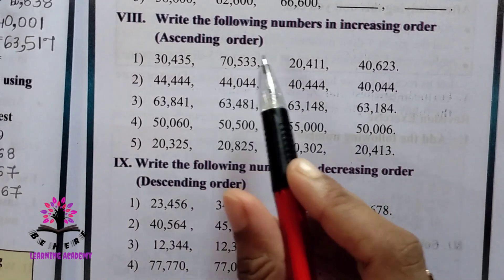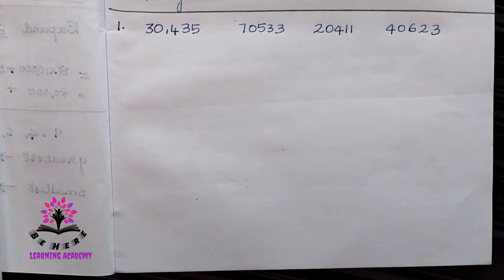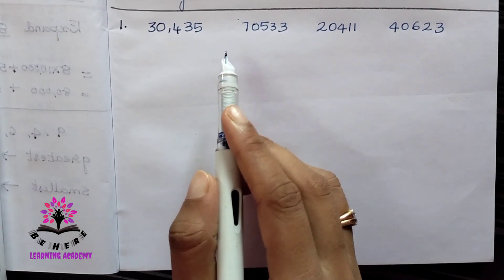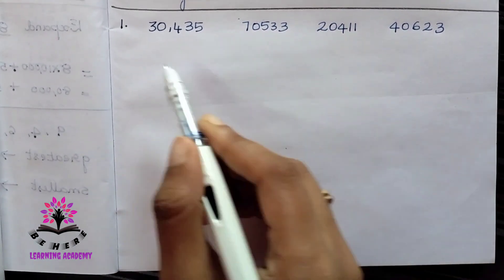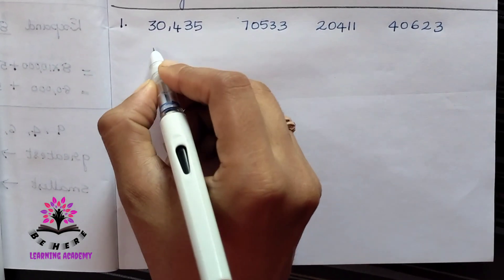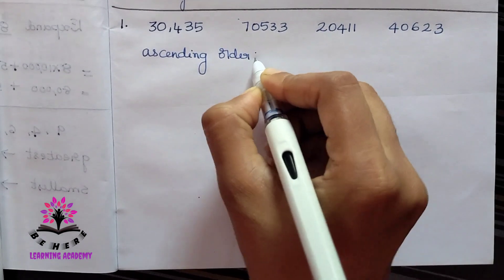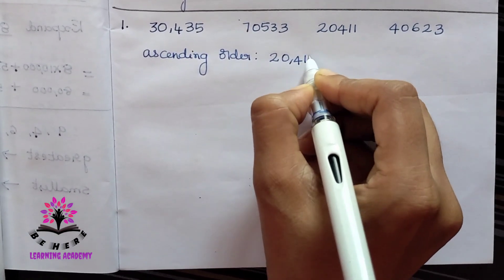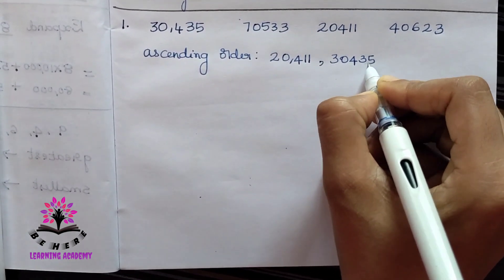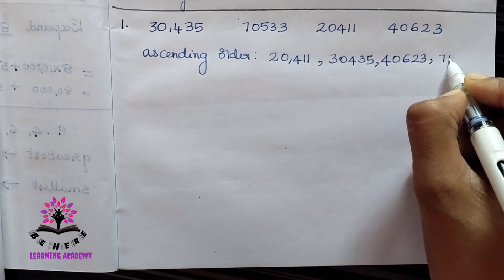Write the following numbers in increasing order, that is ascending order. You have to start with the smaller number and move to the bigger number. Looking at the numbers: one is in the 30,000 range, one in 70,000, one in 20,000, one in 40,000. So ascending order: 20,411 — 30,435 — 40,623 — 70,533.